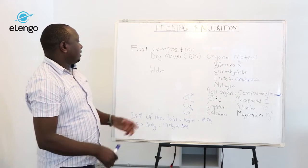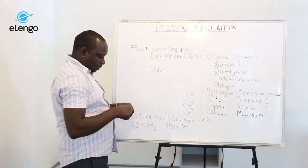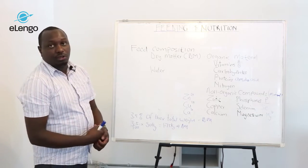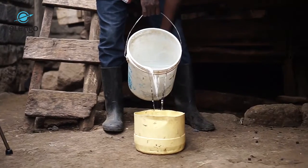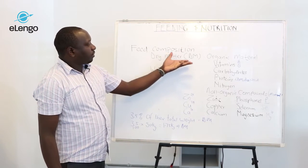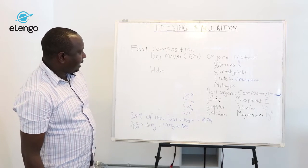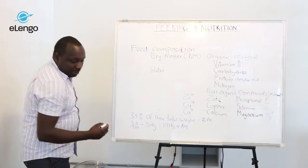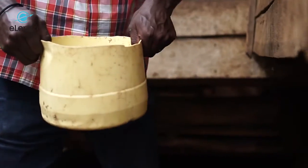The dry matter contains the components we discussed, and later we are going to show some of the feeds that contain dry matter along with the percentages for each feed. The other component in feed composition is water. Water takes almost 80 to 85 percent of any green feed — for example, napier grass and rhodesian which we will highlight later. A mature goat should receive almost 10 liters of water per day.